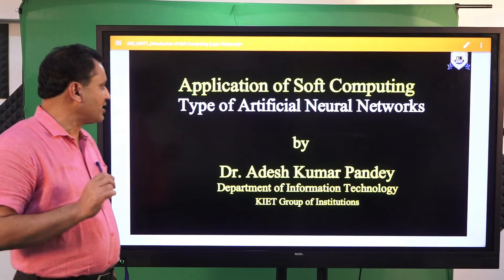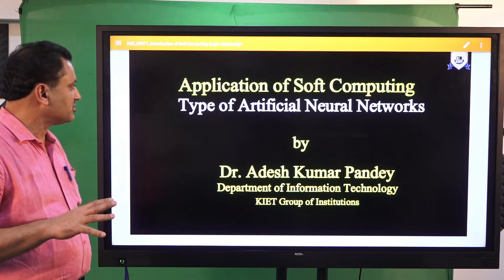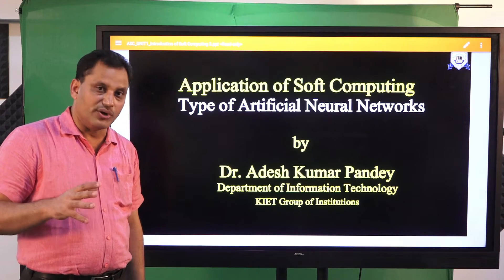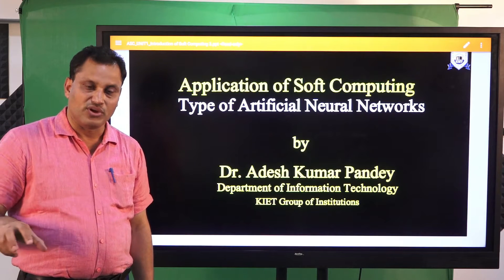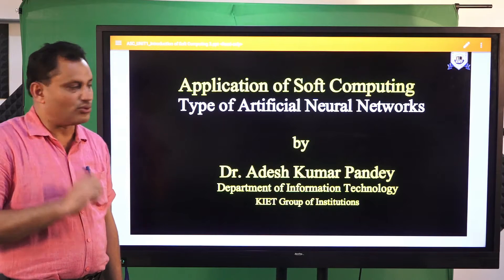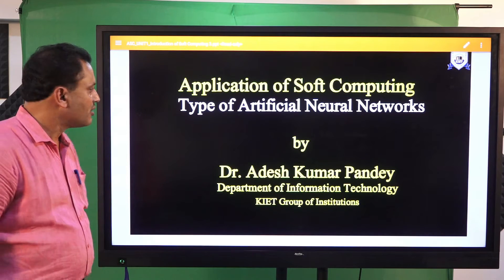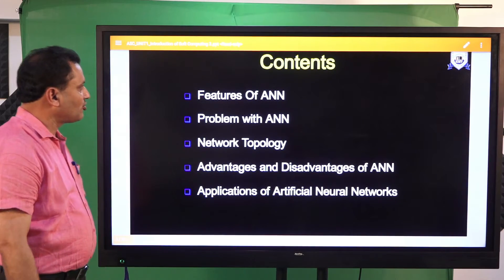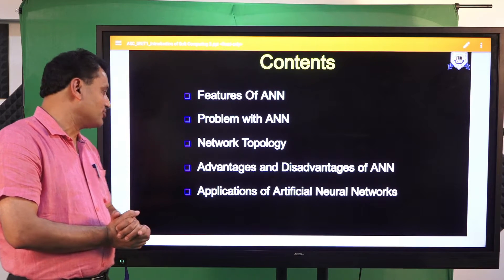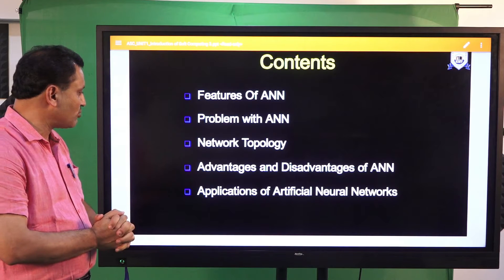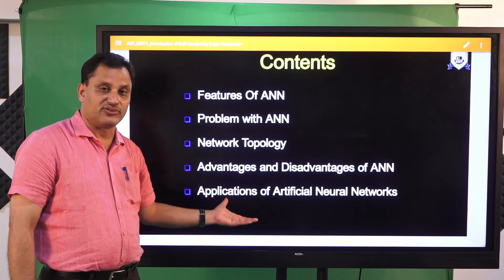In today's lecture we will understand the various types of artificial neural networks. This is important because the structure of the ANN will be decided on the basis of the problem we are going to apply it to. The contents for today's lecture are: features of ANN, problems with ANN, different network topologies, advantages and disadvantages of ANN, and applications of neural network — specifically what kind of domains we can apply neural networks to.